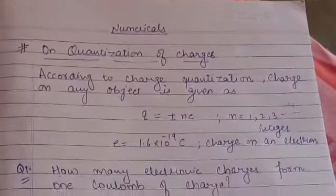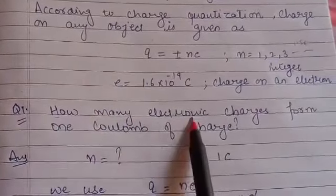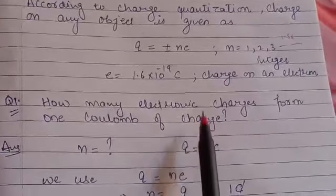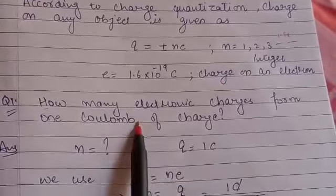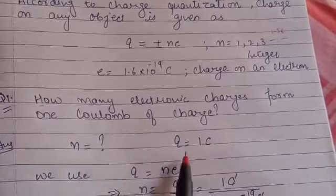So let's start with the first numerical. The first numerical is how many electron charges form 1 coulomb of charge. So firstly read the statement carefully and write down the values which is to be found and which are given.